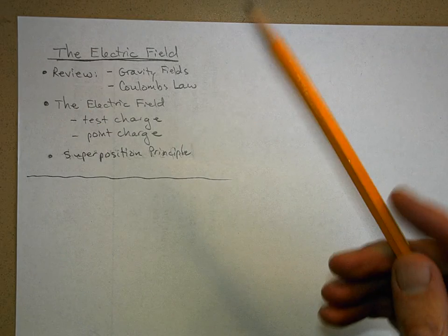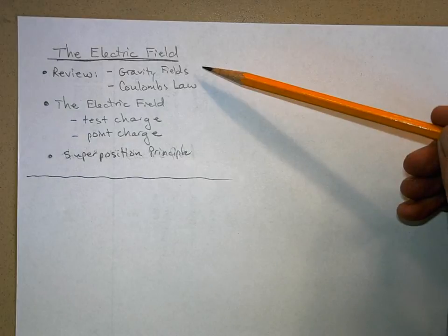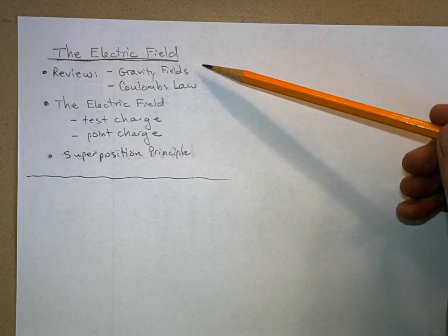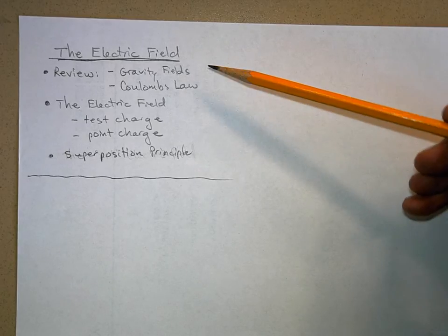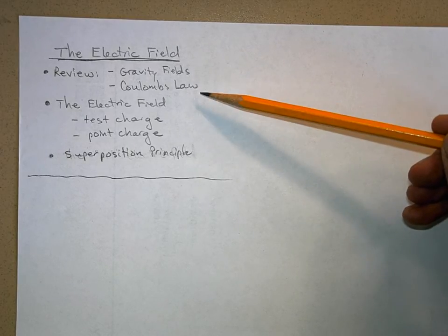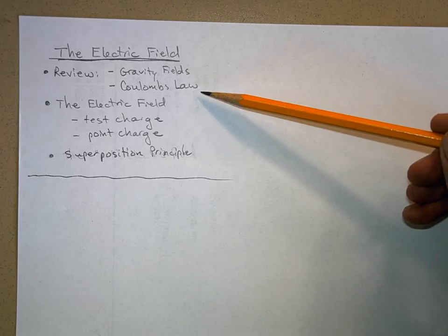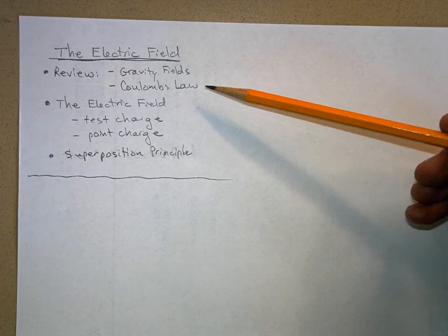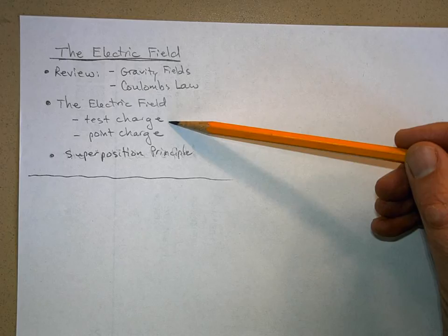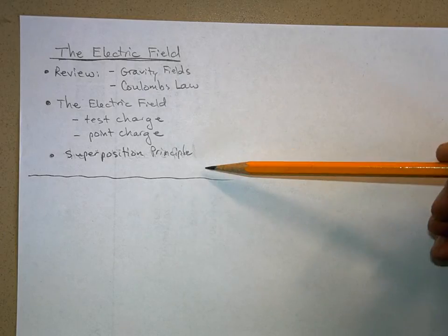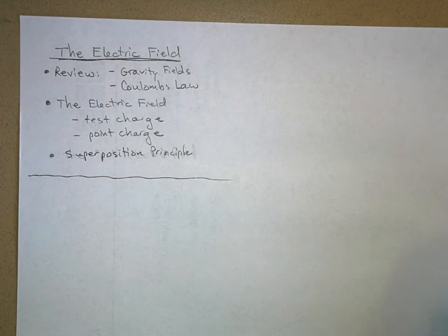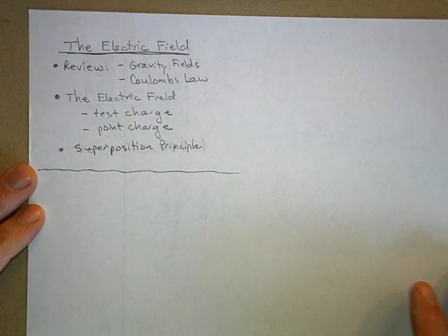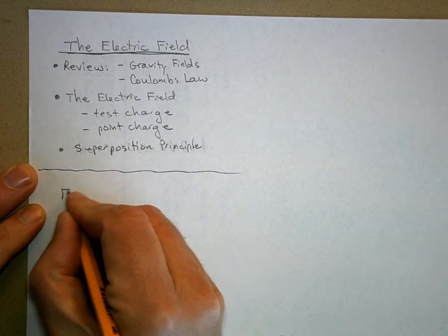Let's review gravity fields and show how we've already dealt with force fields before. We talked about gravitational fields, and we'll show how we're going to use Coulomb's law to define what the electric field is for test charges and point charges. Then we'll talk about the superposition principle for electric fields. Now, I'll recall the force of gravity from mechanics.